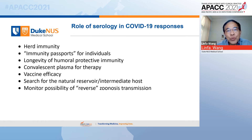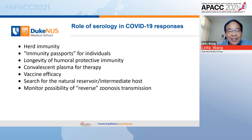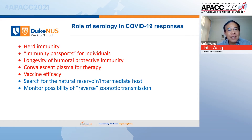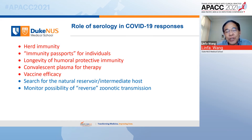Now I'm going to switch to the roles of serology and antibody detection in COVID-19 responses. There are five topics in red related to human applications — herd immunity, vaccine efficacy, and more. The last two in blue relate to animals: one is to search for the animal reservoir, and the other is to monitor the possibility of reverse zoonotic transmission, meaning human-to-animal transmission.